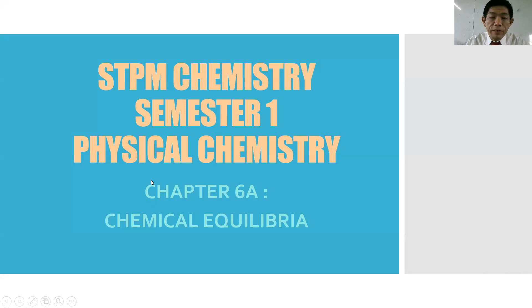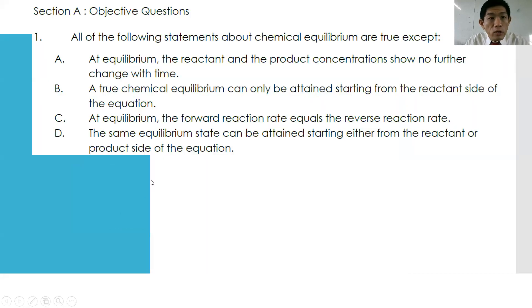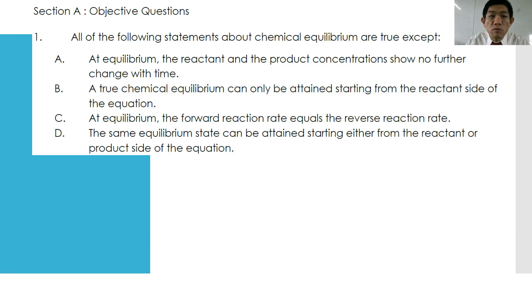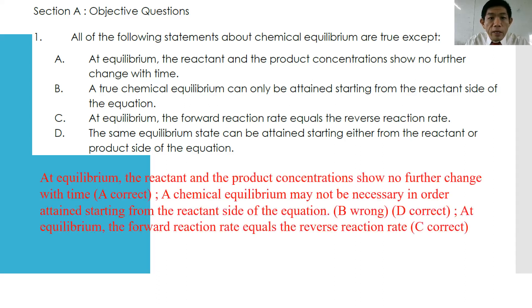We are going to start off with the objective questions as usual. Question number one: all of the following statements about chemical equilibrium are true except. Statement A: at equilibrium, reactant and product concentrations show no further change with time — which is true. Statement B: a true chemical equilibrium can only be attained from the reactant side of the equation — which is also true. And which is wrong?